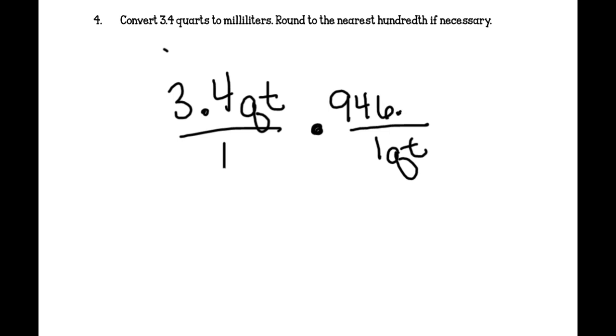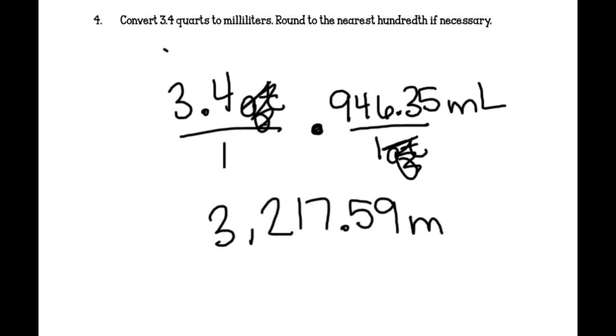Example 4 says to convert 3.4 quarts to milliliters. Round to the nearest hundredth if necessary. So, we have 3.4 quarts times. And we are going to put for every 1 quart there are 946.35 milliliters. Then we go through and we cancel out our labels. So, then we just do this multiplication problem of 3.4 times 946.35. And that gets us 3,217.59 milliliters. We circle it. And that is our answer.